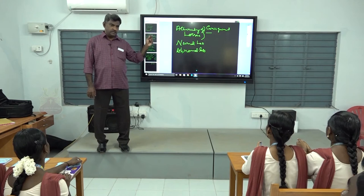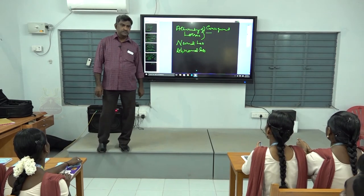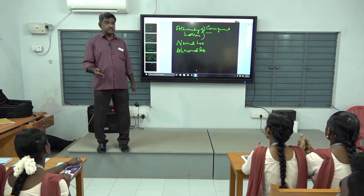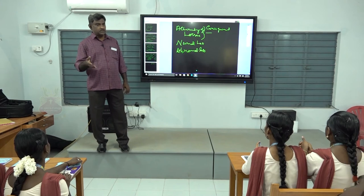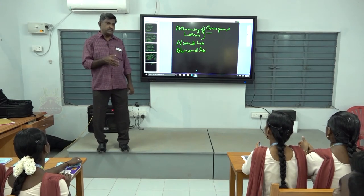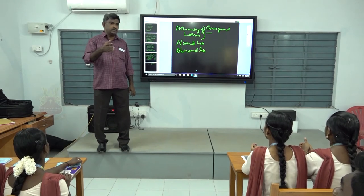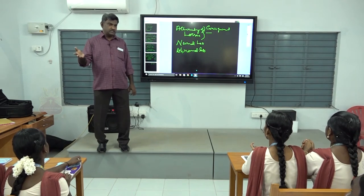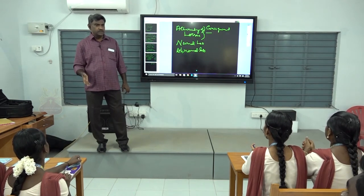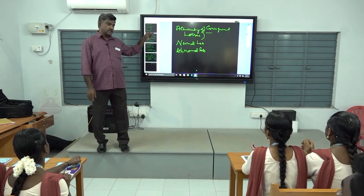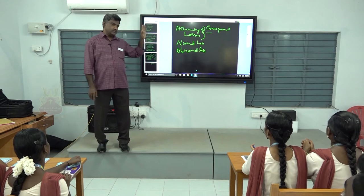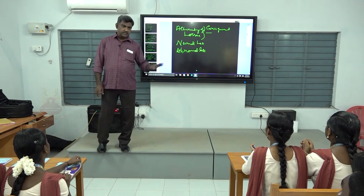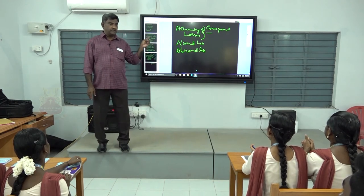If the consignor insures the goods, a claim amount may be received. The abnormal loss account is credited with the claim amount, and the balance, if any, is transferred to the profit and loss account. Normal loss need not be accounted for in the books, but abnormal loss is accounted for in the consignment and valued on the basis of closing stock.